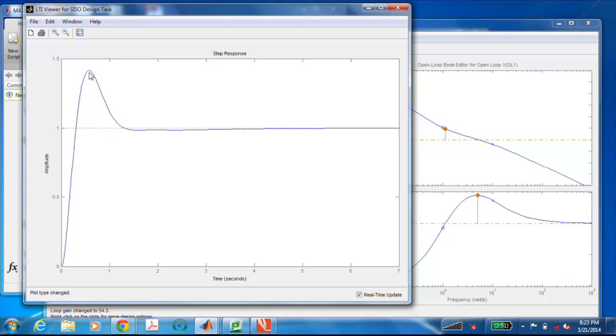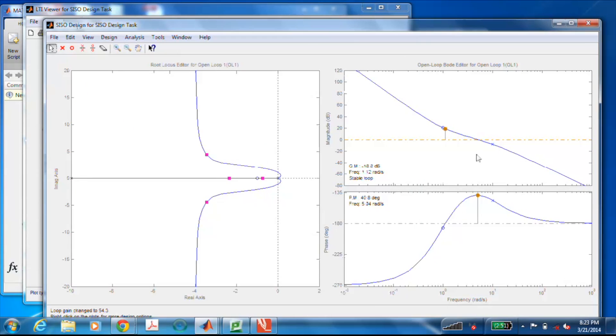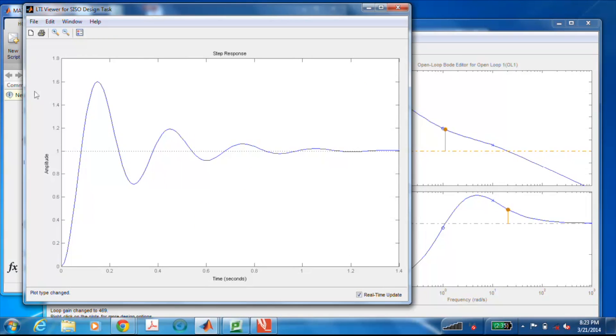Now, as we increase the gain more, let's increase it such that we get about 21 degrees of phase margin again, but on the other side of that peak. Let's see if I can do it. And that's probably about as close as I'm going to get. Now, the gain crossover frequency is way out here at 21, roughly, radians per second, much faster than it was before. So the closed loop bandwidth is probably going to be 30, 40 plus radians per second. Let's look at that.